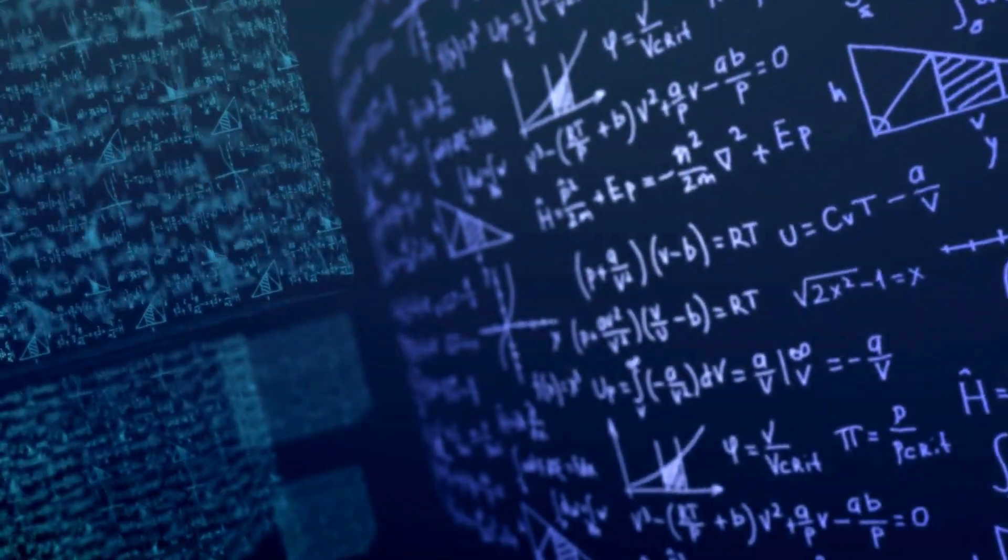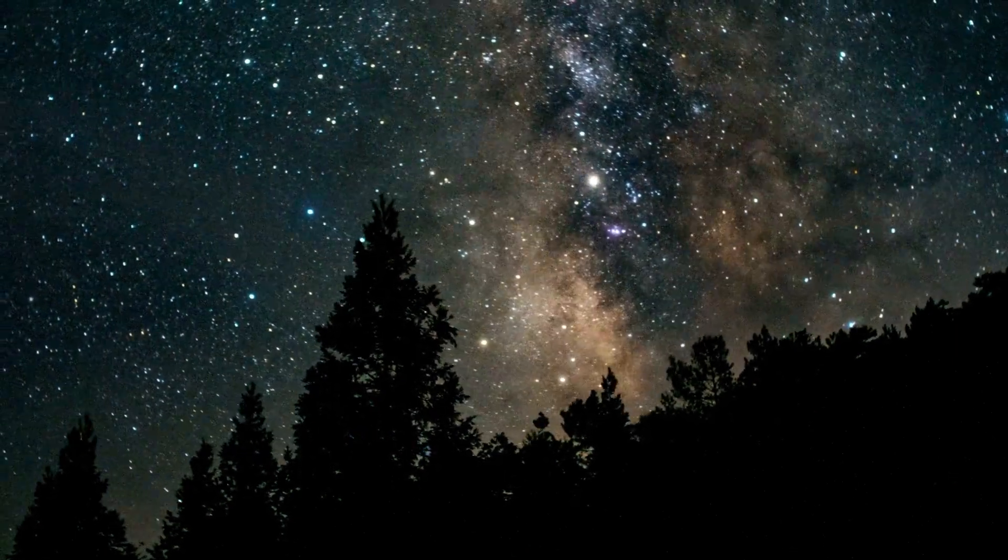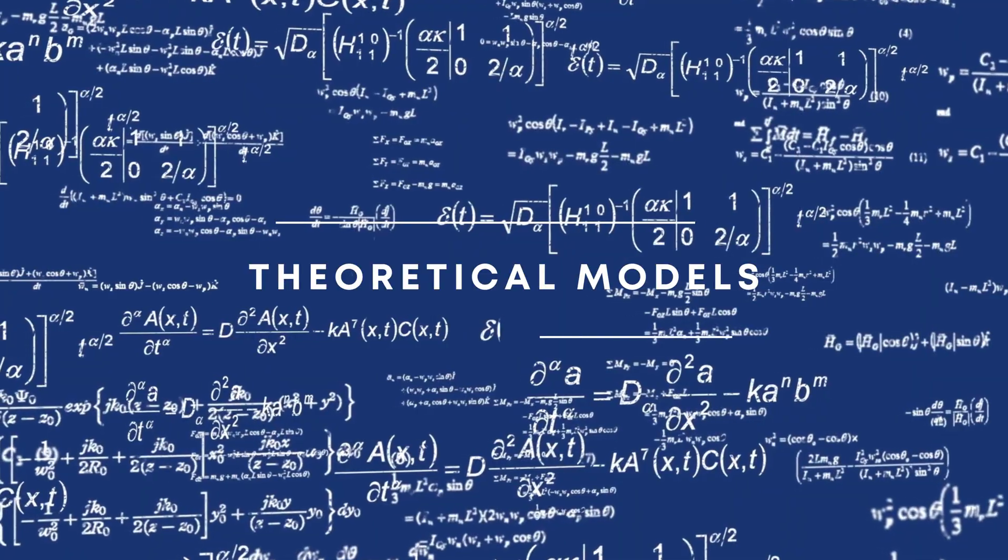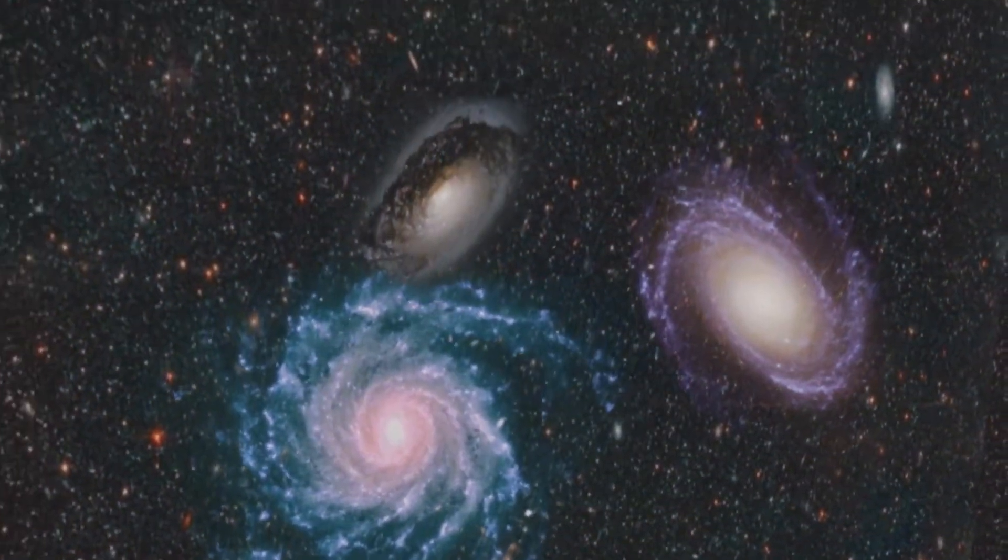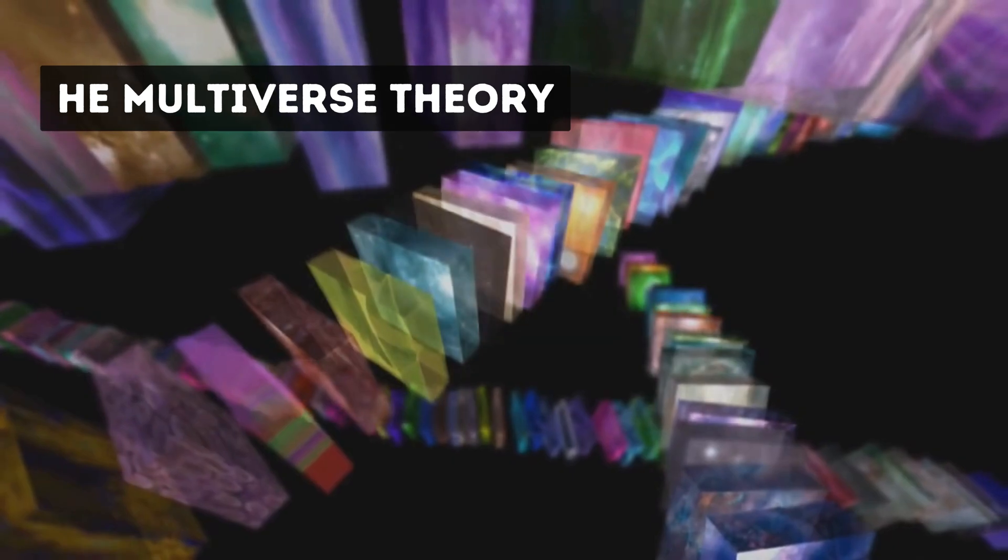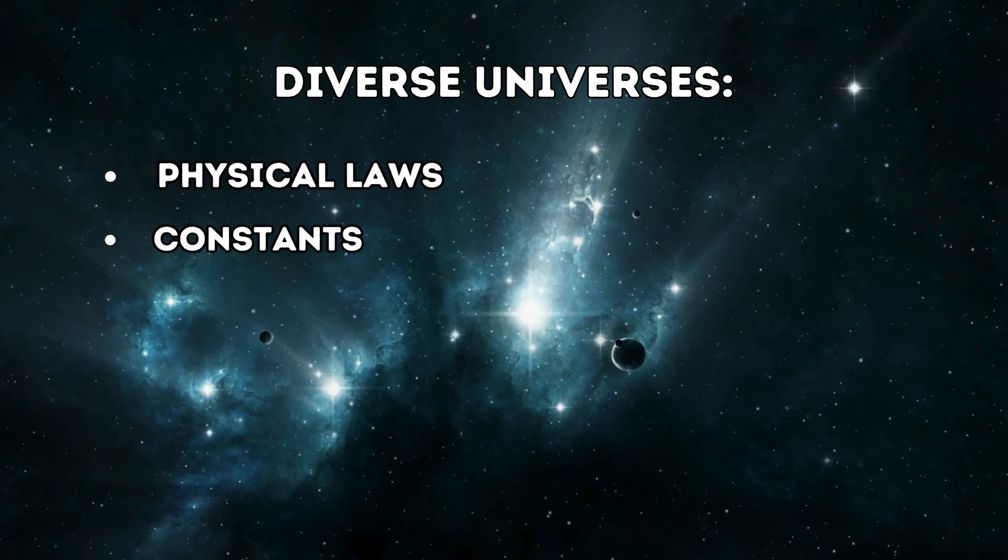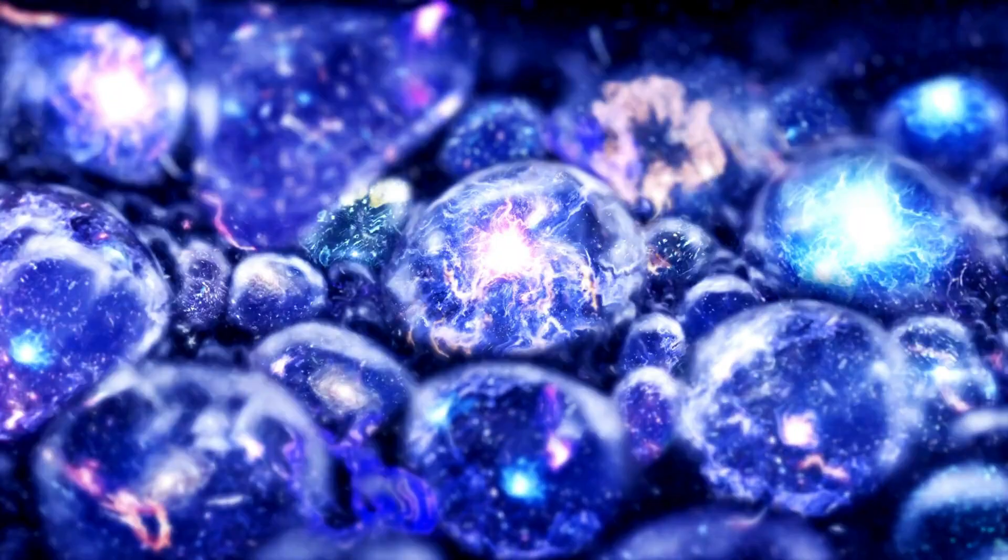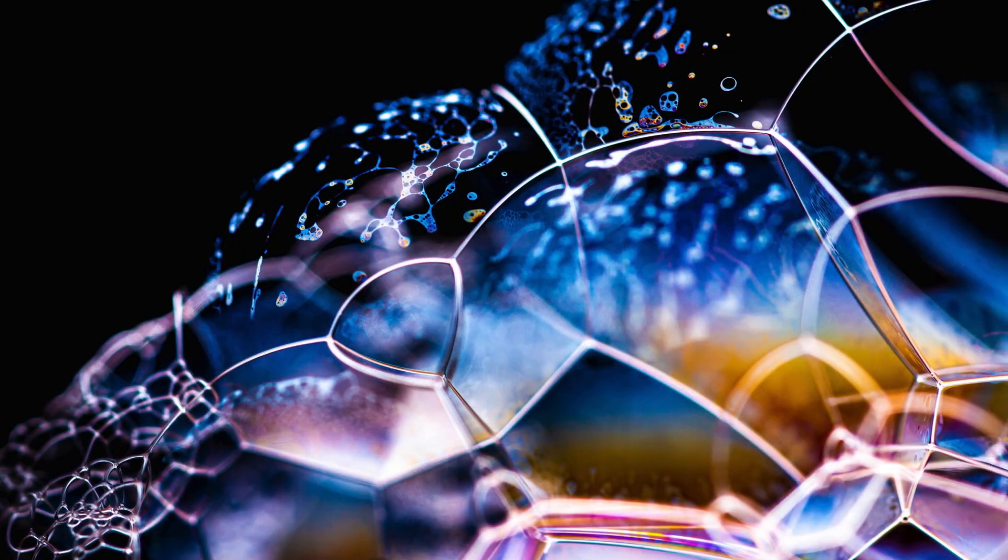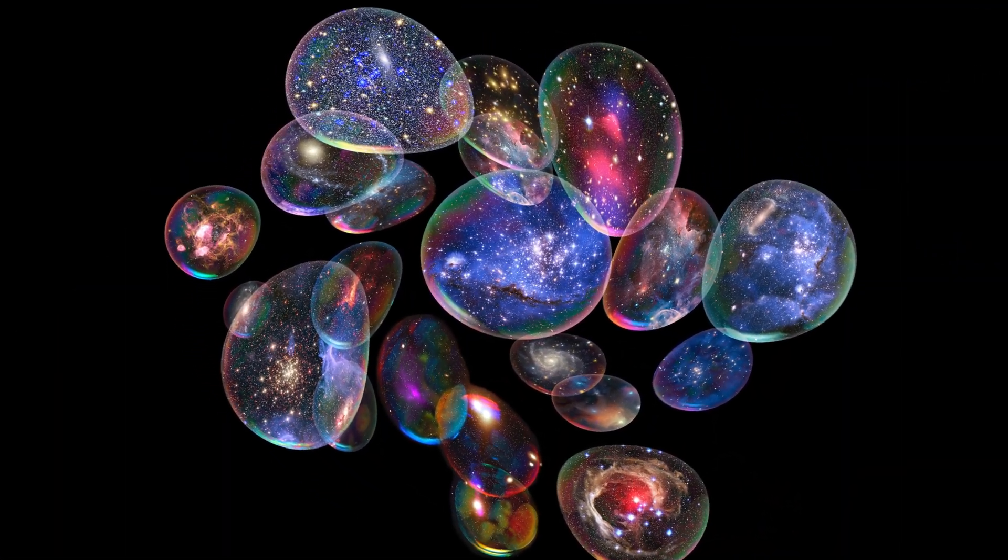Now, let us enter the sphere of theoretical concepts and discuss what might be located outside the visible universe. Scientists have proposed several intriguing theories about the nature of the universe. One of the most fascinating theories is the multiverse theory. It suggests that our universe might be just one of many universes that exist. These other universes could have different physical laws, constants and conditions. According to some models, these universes could be like bubbles in a vast cosmic foam, constantly forming and colliding. Each bubble represents a different universe, potentially with its unique properties.